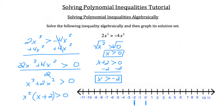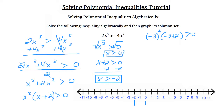I'm going to choose a point to the left of negative 2 to test that region first — I'll choose negative 3. Plugging it into the reduced form: negative 3 squared times (negative 3 plus 2) is greater than zero. Well, negative 3 squared is 9 and negative 3 plus 2 is negative 1, so 9 times negative 1 is negative 9, which is not greater than zero. So this region to the left doesn't work.